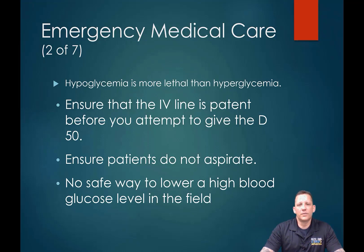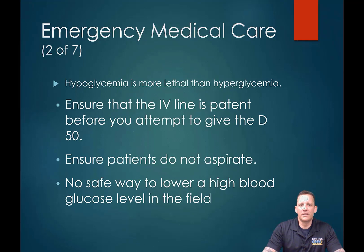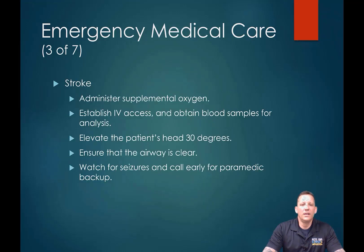There's no safe way to lower high blood glucose levels in the field. The only thing we can do is give a little saline, which may help with blood pressure issues if the sugar concentration is so high that the blood is becoming viscous. That can cause blood pressure issues, but we're not going to go crazy with it — standard saline dose for somebody who looks dehydrated.